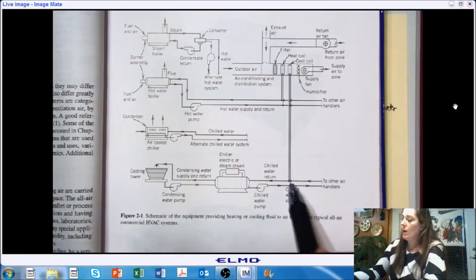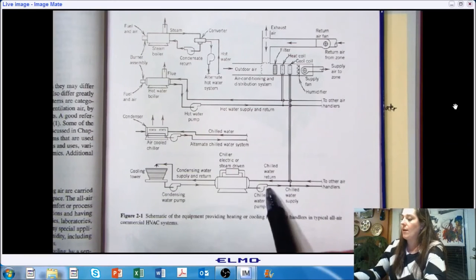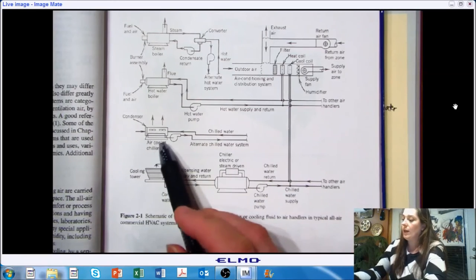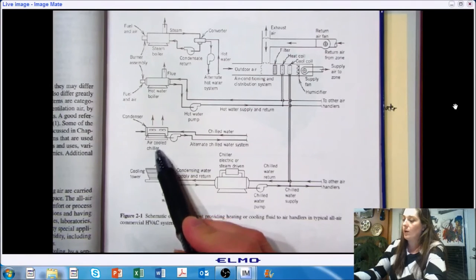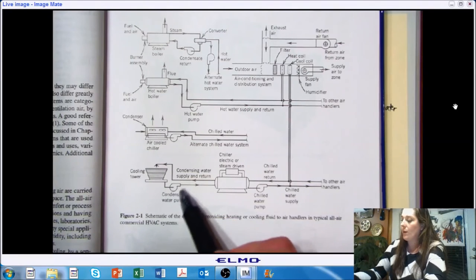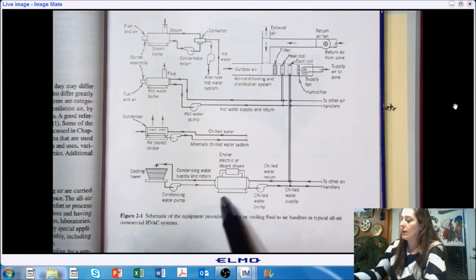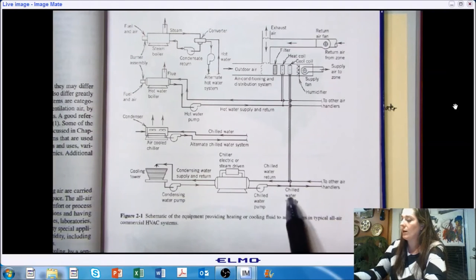Similarly, for the cooling coil, we can trace that back and we find that we have a chilled water supply. So they're giving the options for an air-cooled chiller or a cooling tower. And you can trace the components through here as well.